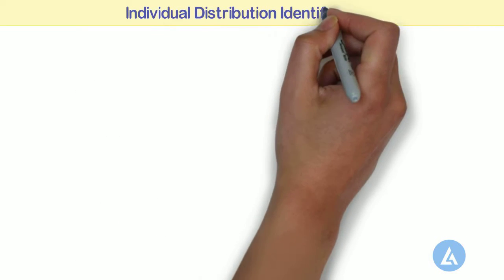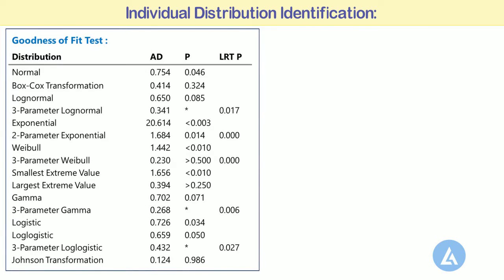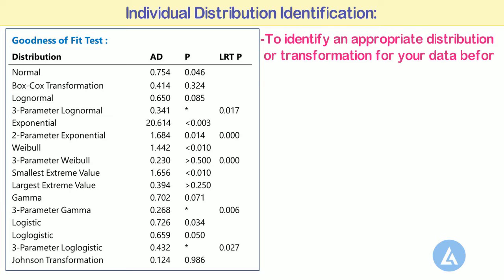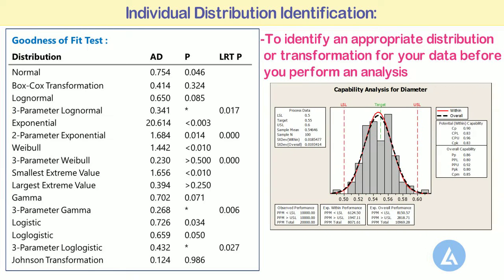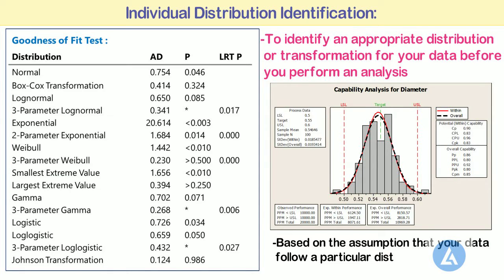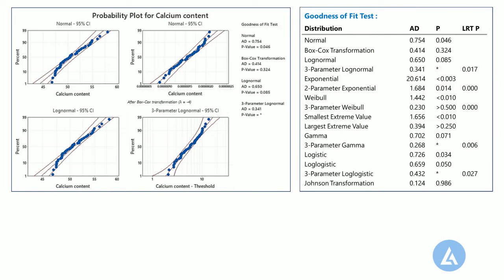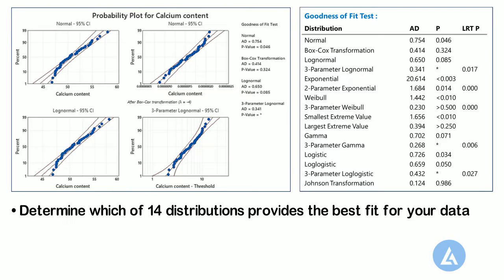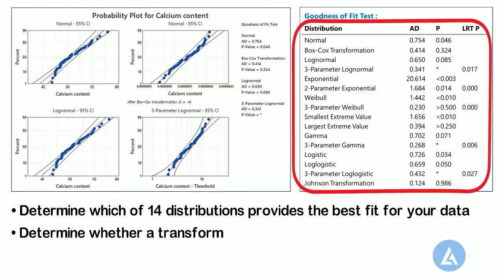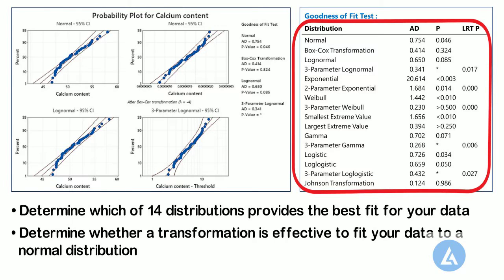Individual Distribution Identification is used to identify an appropriate distribution or transformation for your data before you perform the analysis. Many statistical analyses, such as capability analysis, are based on the assumption that your data follows a particular distribution. Individual Distribution Identification provides probability plots and goodness-of-fit tests that allow you to determine which of the 14 distributions provides the best fit for your data, and to determine whether a transformation is effective to fit your data to a normal distribution.